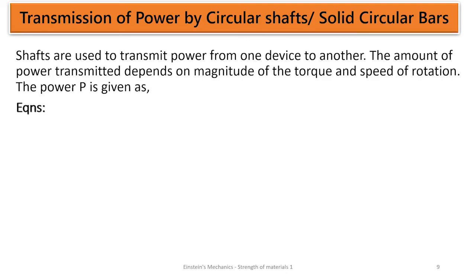In today's episode we are going to look at transmission of power by circular shafts or solid circular bars. Shafts are used to transmit power from one device to another. The amount of power transmitted is dependent on some factors, including the magnitude of the torque and the speed of rotation.